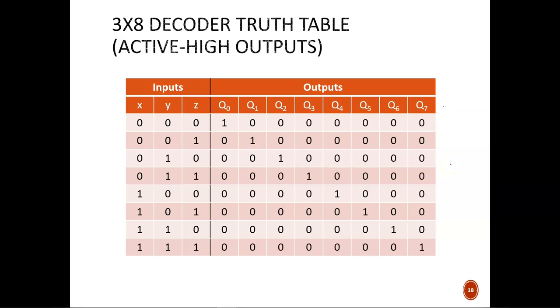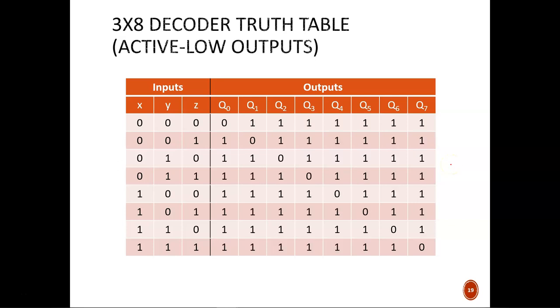Fun thing here, it looks like snow falling as they flip back and forth between the tables, because all of the entries are swapping. In the active low table, the selected line holds a 0, all others hold a 1.